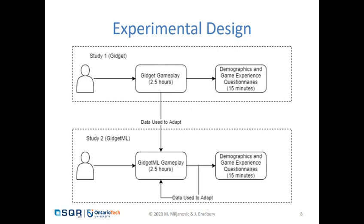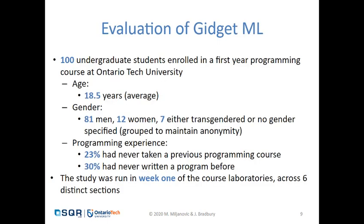Participants in the second group played through this adaptive game, and as more participants took part, their data was continuously used to adapt for future participants. All participants also completed the demographics and game experience questionnaires at the end of the study. We had 100 undergraduate students enrolled in a first-year programming course at Ontario Tech. The average age was 18 and a half years old, most of whom were men, due to the gender distribution in the programming course. Many students had never taken a previous programming course, and many had never written their own program before. The study was run in the first week of course laboratories across six distinct sections, with the first half playing Gidget and the second half playing GidgetML.